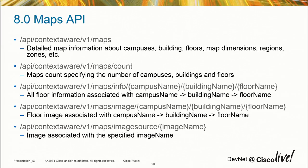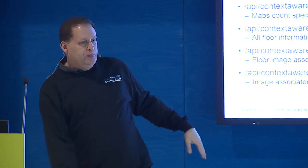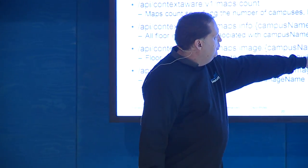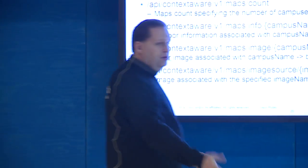If I want more information pertinent to a floor, I can give it the campus, the building, and the floor name, and it will return that. I can also go get the image — I can download the image based on just the campus, building, and floor name. If I already know the image name from the maps info, I can directly query for it as well. If you have a building image or campus image, you can do the same, just omitting the floor, and it will download that image.